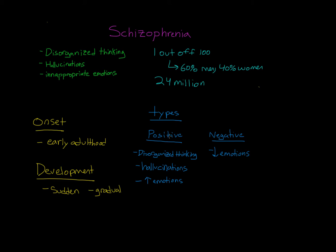Within these two types, we can further break it down into subtypes, which are what appear in the DSM. These include paranoid schizophrenia, which is of the positive variety and often includes hallucinations and delusions associated with feelings of persecution and paranoia. We also have disorganized schizophrenia, also a positive type, associated with disorganized thoughts and speech. People with disorganized schizophrenia might display something called a word salad, meaning they jump from sentence to sentence and idea to idea with no apparent link between them.